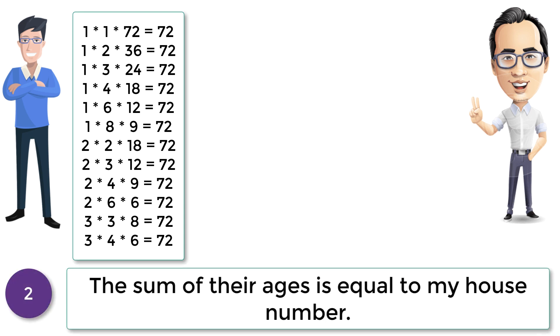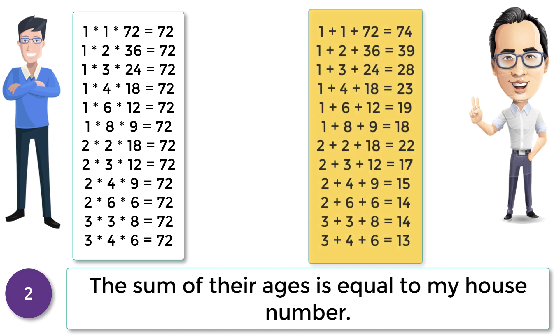Let's check the second hint now. The second hint is: the sum of their ages is equal to my house number. We have already calculated the products; now let's see the sums of their respective ages. If you carefully observe in this particular detail, all sums are unique except 14. So the age sum must have been 14; otherwise Ravi would have guessed the ages from the hint itself.